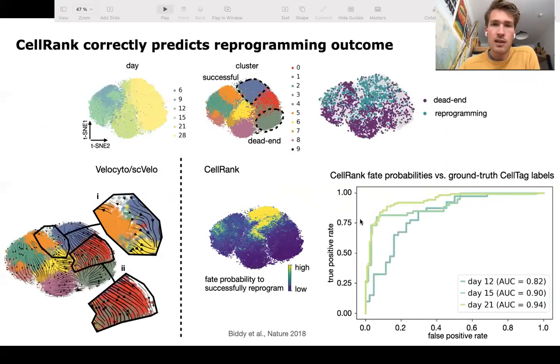We validated this on in vitro data - this is data by Samantha Morris - where ground truth in the form of lineage tracing is available. There are two outcomes for this process, either dead-end or successful. If you just look at your low-dimensional projection of velocity arrows, you don't see any route that leads towards the successful state because it is actually very rare.